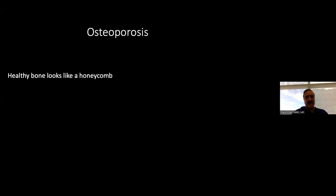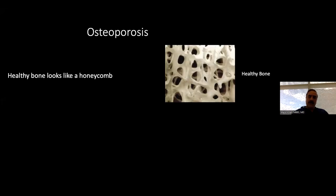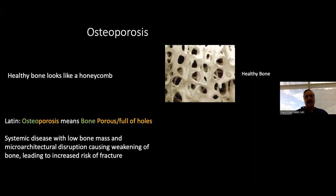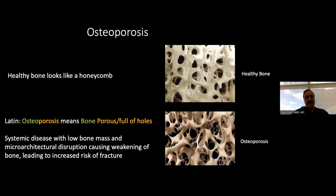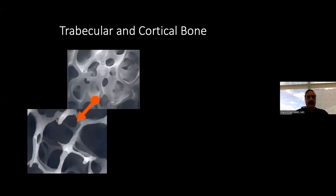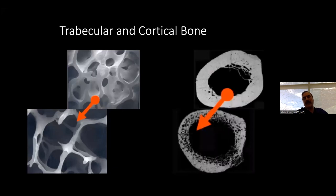Osteoporosis is perhaps the most important cause of vertebral fractures. Normal bone has sinusoidal cavities and a trabecular pattern. Osteoporosis literally means porous bones — bone that is full of holes. The sinusoidal cavities have enlarged and the trabecular pattern has significantly thinned out, giving the typical appearance of osteoporotic bone. Even the cortical bone shows similar loss of osseous material, and you can see porous-looking cortical margins of the bone.